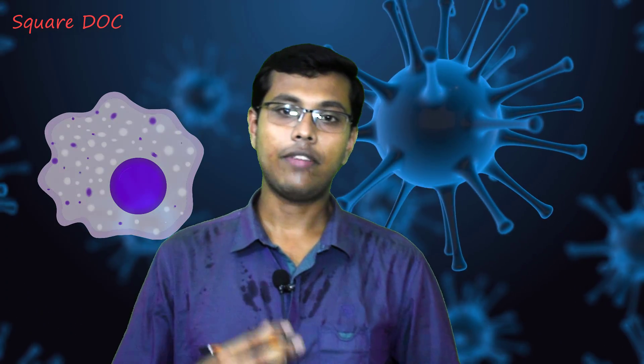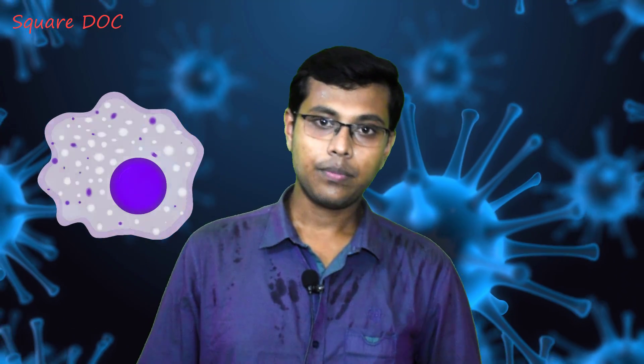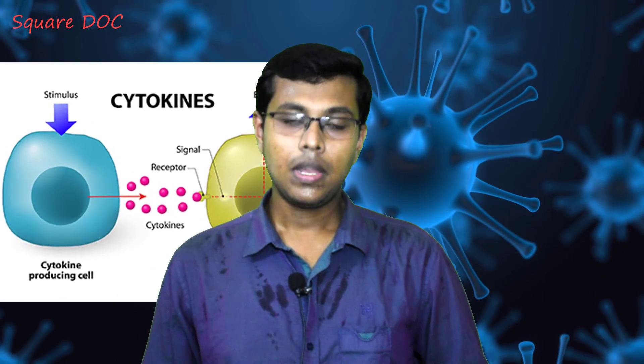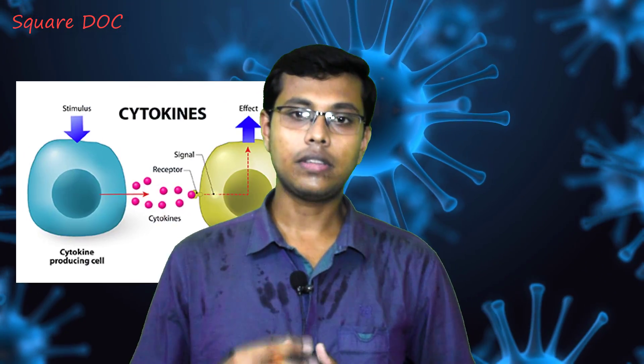Let us now discuss the pathogenesis. Normally, when the body has an infection, neutrophils and macrophages are activated. These help the immune cells, which then release a large amount of cytokines. These cytokines activate macrophages and T-helper cells, which leads to an inflammatory reaction. This inflammatory reaction results in fibroblastic activity and collagen deposition. That is the normal mechanism.